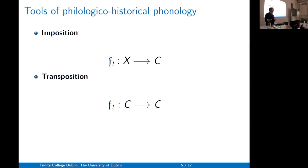For philological historical phonology, I think we also have two methods. There's less explicit methodological discussion of this, so I'm partly speculating here — but this is how I'm thinking of it for our project. We want to figure out how Chinese was pronounced, and I think we have two methods. One I call imposition, where we know something about how it's pronounced.